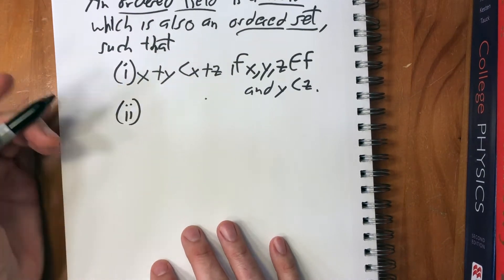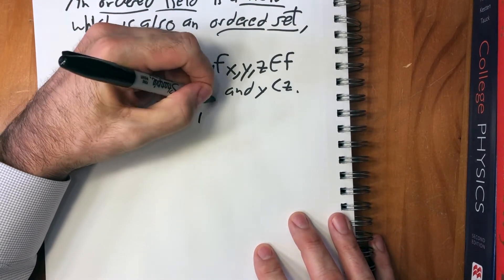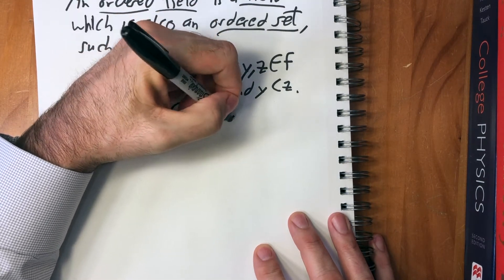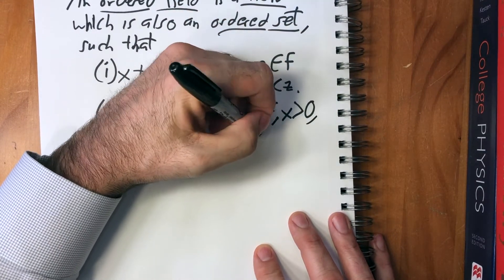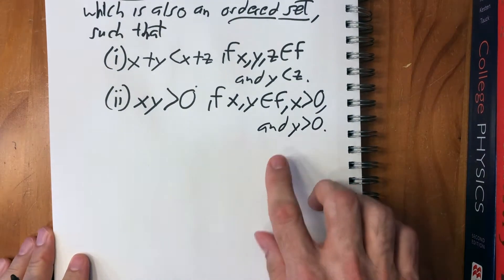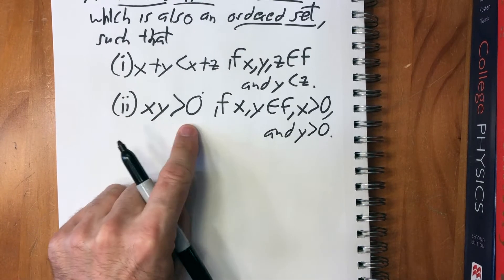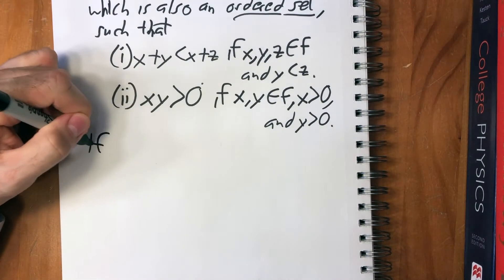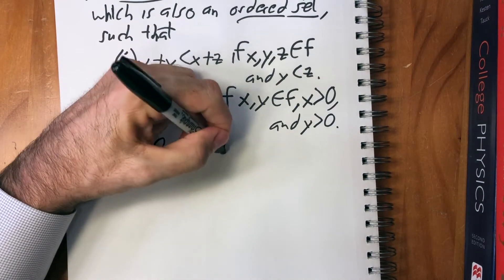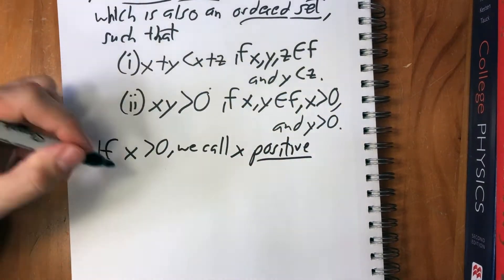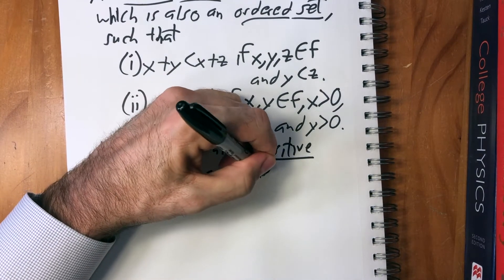And two, that xy is greater than zero if x and y are elements of F, x is greater than zero, and y is greater than zero. In other words, if x and y are both positive, then their product is positive. And just to state this, if x is greater than zero, we call x positive. And if x is less than zero, we call x negative.